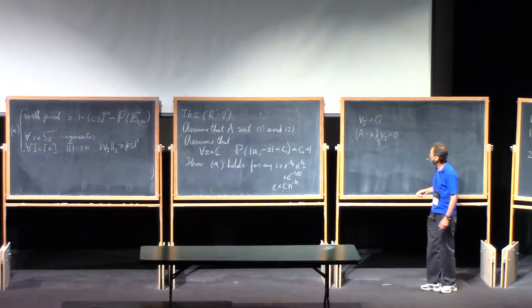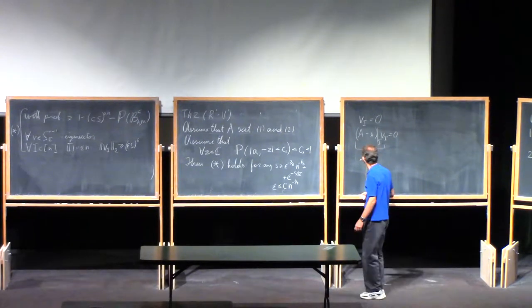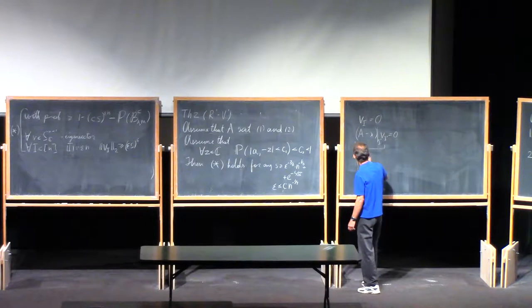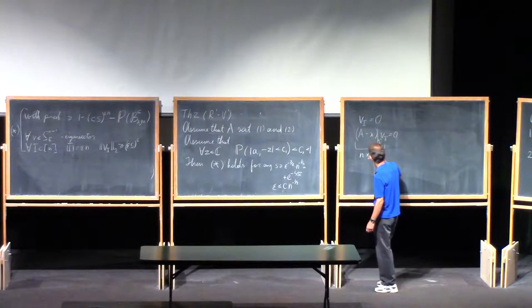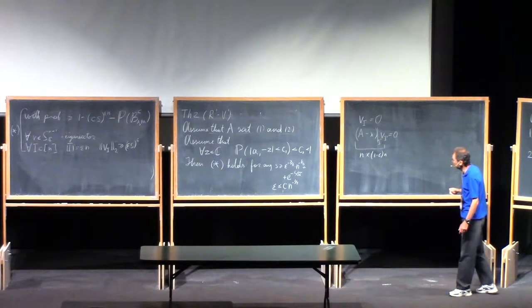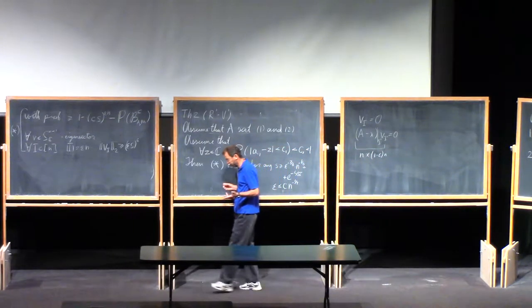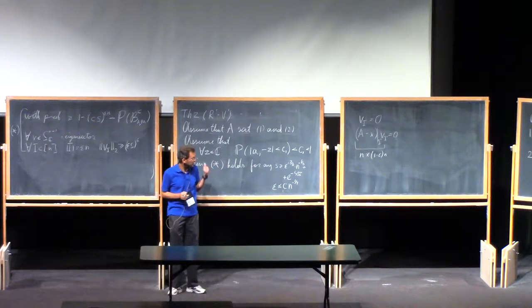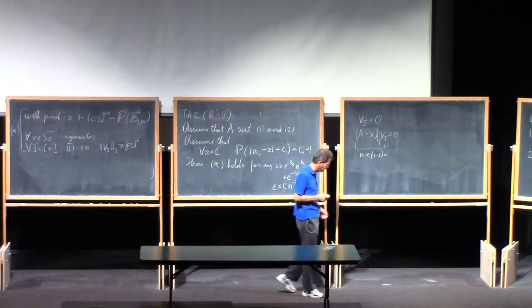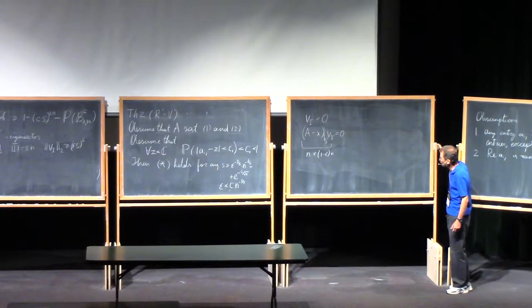But this means that I can reduce this equation to only the coordinates of i complement. And it means that this matrix has a non-trivial kernel. But what is this matrix? This is the matrix with n rows and 1 minus epsilon n columns. This is rectangular, and if the matrix is random, it's improbable that the kernel would be non-trivial.